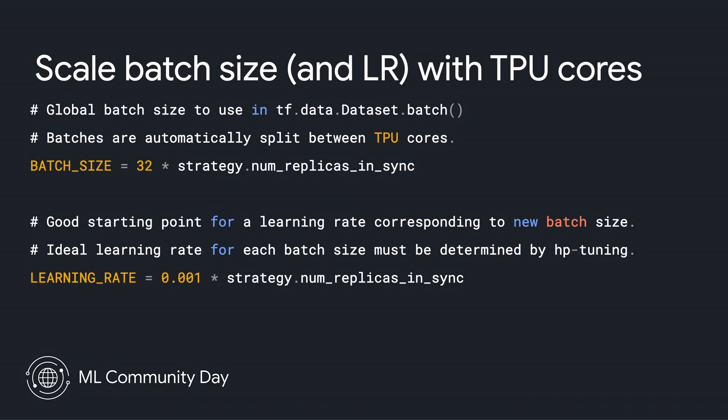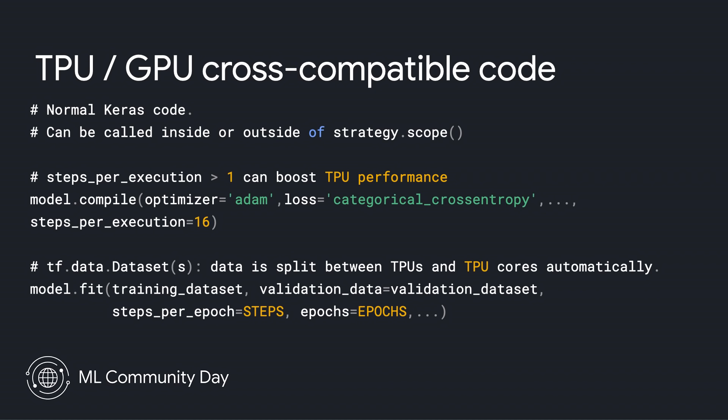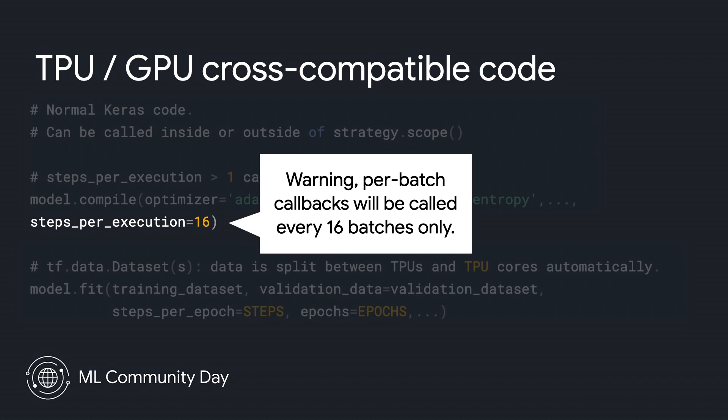While training, the batches are automatically split between the TPU cores. As you perform hyperparameter tuning, you can use settings from the strategy that allow the optimum batch size as well as learning rate. Notice that the compile and fit calls are the same as normal Keras code. To improve performance, you would set steps per execution higher than one — say, to hundreds of steps — knowing that the per-batch callbacks would only be executed every hundreds of batches.